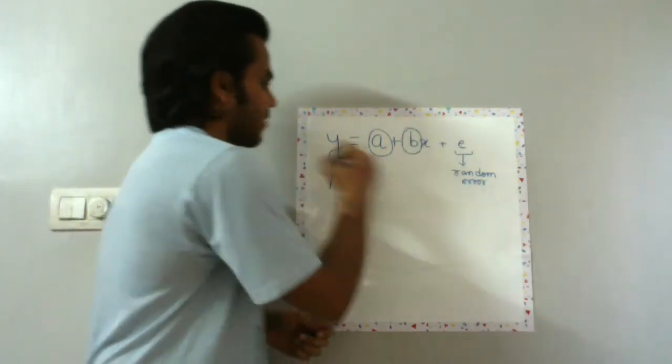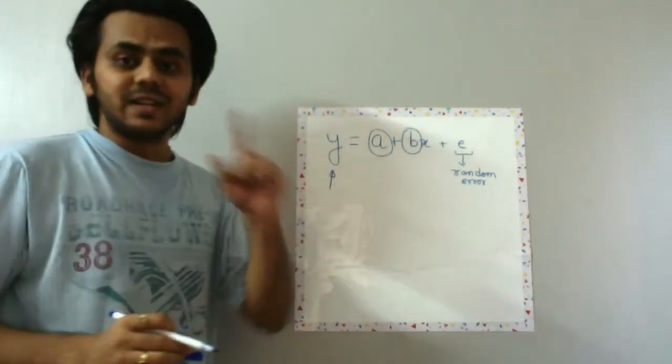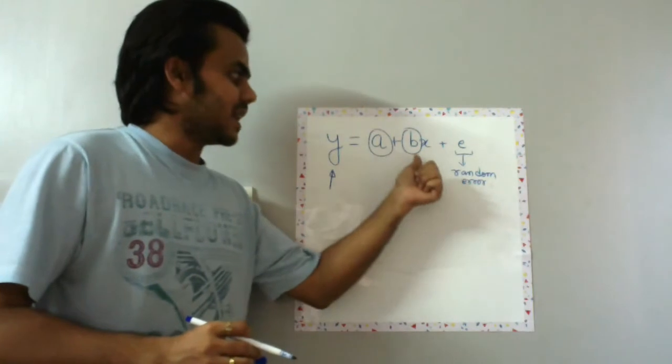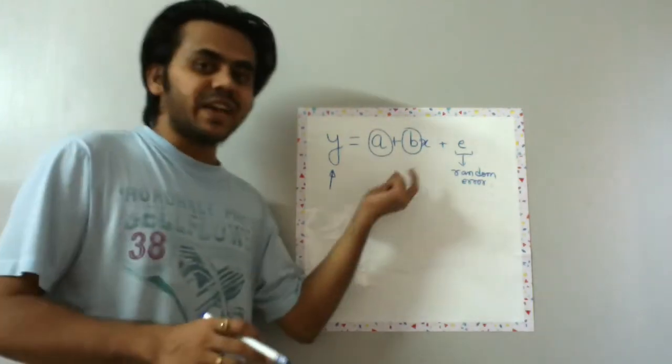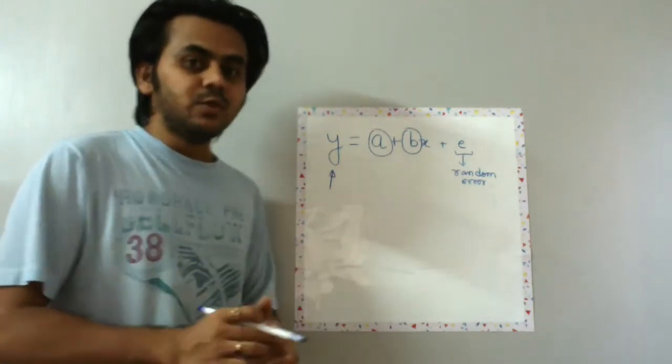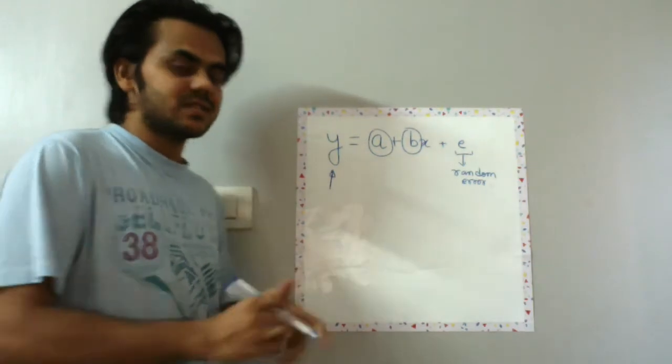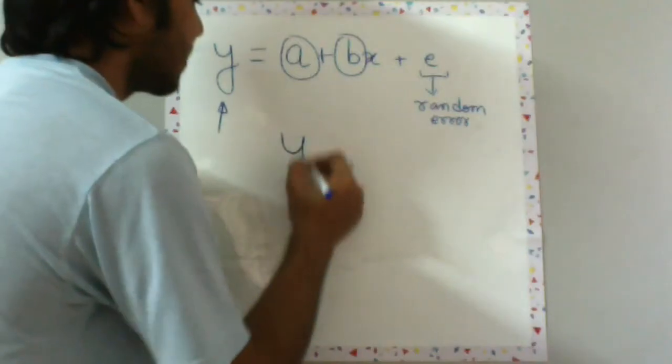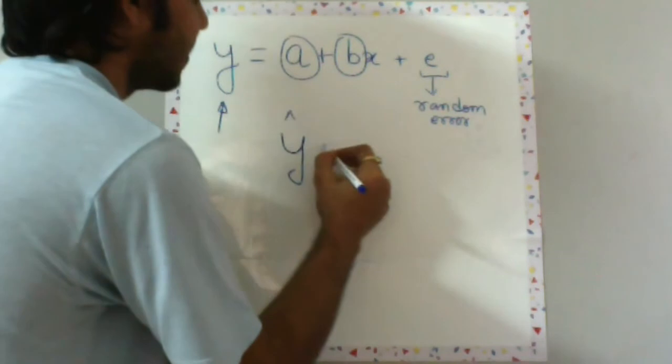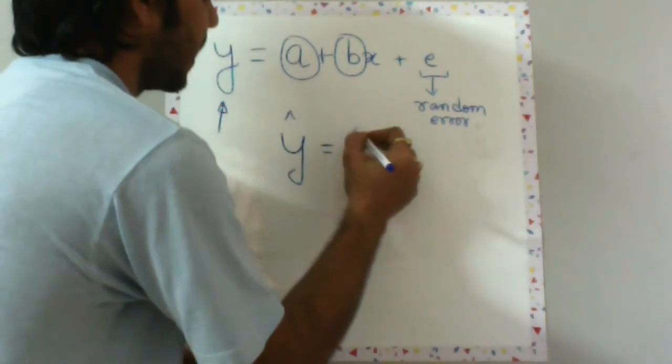X decides the value of y dependent on the parameters a and b. Now when we find out the estimated values of a and b, we do not write the equation like this. How we write it is y hat is equal to a hat plus b hat x.